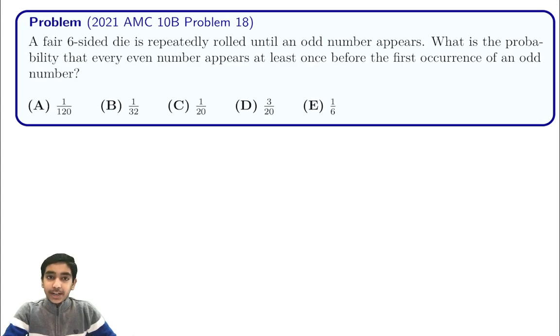Hi everyone, in this video we're going to explore the solution to the 2021 AMC 10B number 18. In this problem we have a fair six-sided die that is repeatedly rolled until an odd number appears.